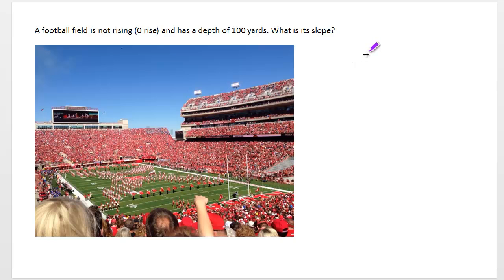Now let's talk about two edge cases. A football field has zero rise over a lot of run, in this case 100 yards. Zero divided by 100 is zero. So any time you have no rise and a lot of run, your slope is zero.